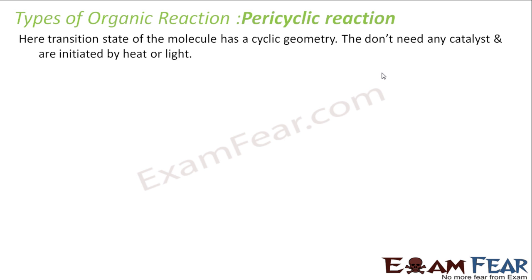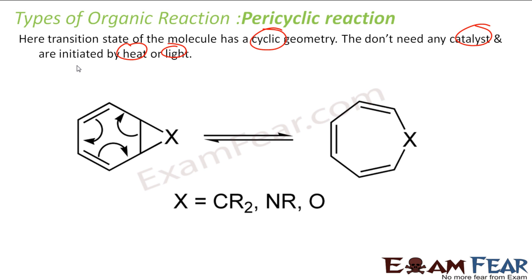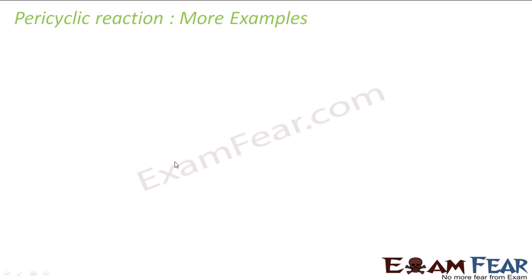The next is pericyclic reaction. Here the transition state of molecule has a cyclic geometry. Please note you don't need any catalyst, no heat or light is required for this reaction. For example in this case, this happens on its own. So this X can be CR2, NR or O. This happens on its own, the way we have resonance, so this can exist.